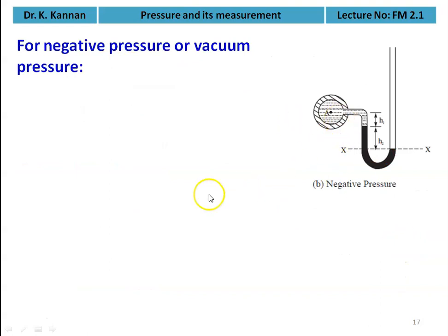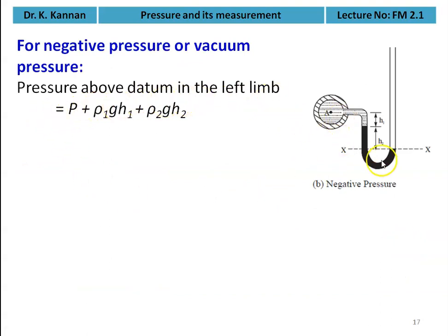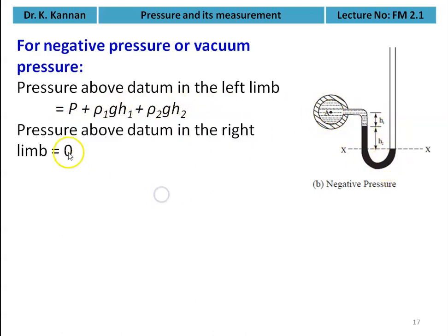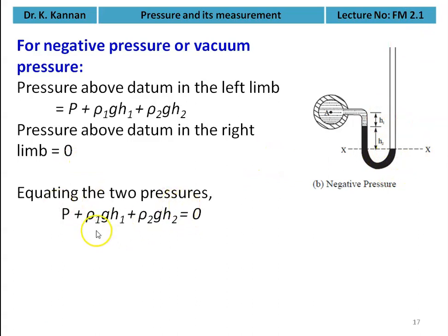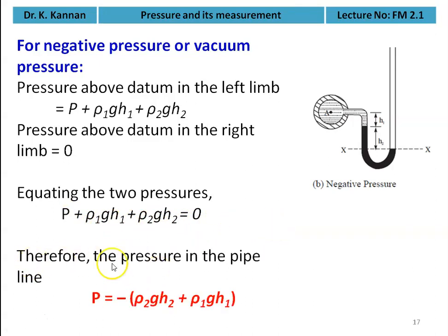For negative pressure: in the left limb we have the pipeline fluid at height h1 and mercury at height h2, plus the pipeline pressure P. The right limb has no fluid above the datum, so it equals zero. Equating: P + rho1·g·h1 + rho2·g·h2 = 0, giving P = −(rho2·g·h2 + rho1·g·h1). The negative sign confirms this is vacuum or negative pressure.